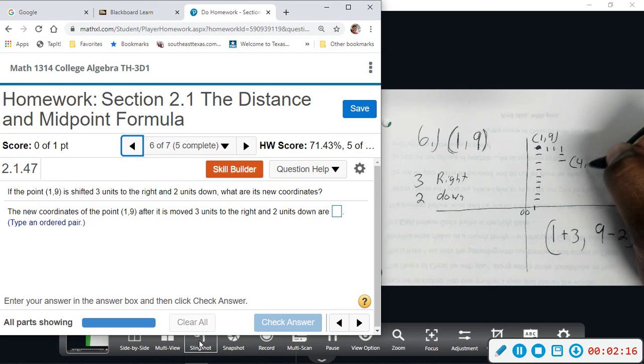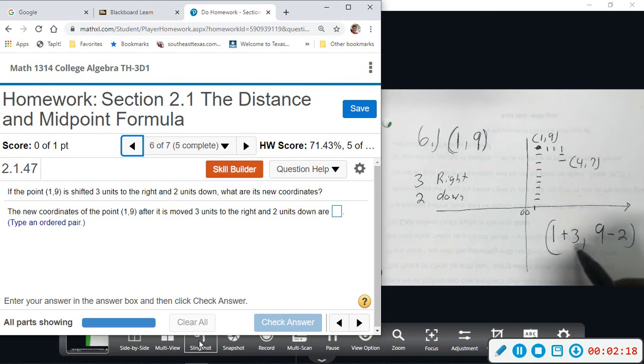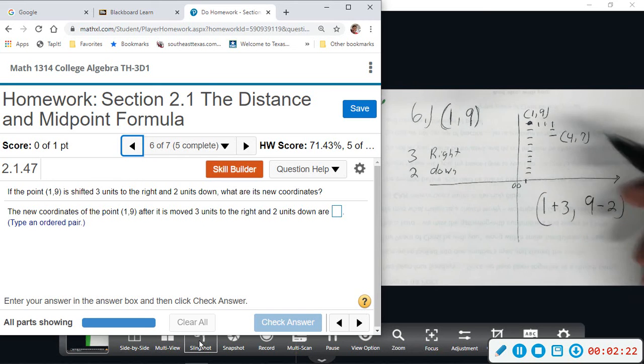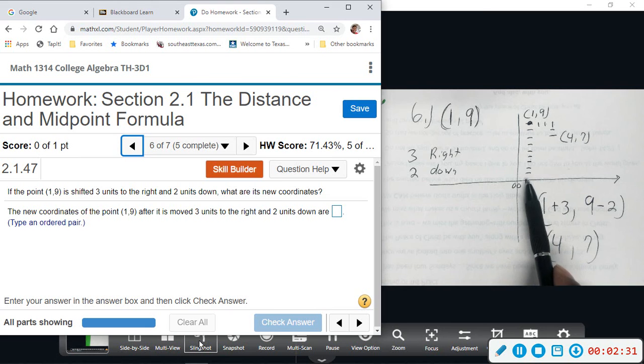And mathematically you can do it as well: 1 plus 3 to the right gives us 4, and 9 minus 2 gives us 7. So likewise you should be able to do if they went to the left you would subtract that number, if they went up you would add.